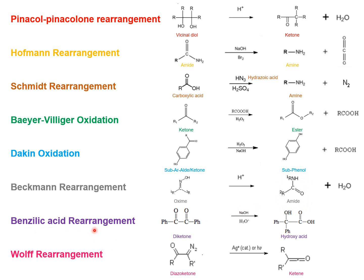In benzilic acid rearrangement, the reactant is a diketone containing two R groups. When treated with alkaline conditions, it forms a hydroxy acid. One ketone group is converted to a carboxylic acid while the other carbonyl group is converted into a hydroxy group, and the carbon bearing the hydroxy group now has both R groups attached to it.